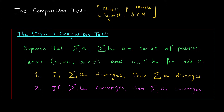That feels somewhat intuitive. If this series is diverging and all of the terms are positive, that means its partial sums are getting bigger and bigger — they're blowing up to infinity. But this sum consists of even bigger terms, so the partial sums of the bₙ's are also going to blow up to infinity. That's part one. Part two says that if the big series converges, then the small series must also converge. If you add up all the terms from the large series and end up with something finite, it makes sense that the same would happen for the small series.